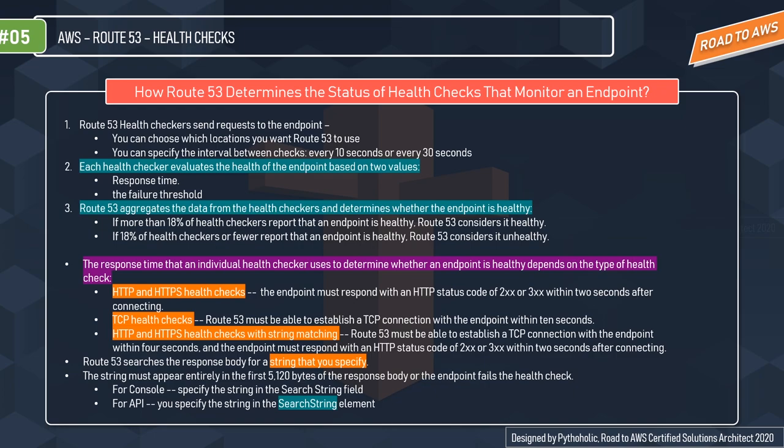The response time an individual health checker uses depends on the type of health check, and there are multiple types. The first type is HTTP and HTTPS health checks: the endpoint must respond with an HTTP status code in the 2xx or 3xx range within two seconds after connecting. So status codes like 200, 201, or 300 are considered healthy.